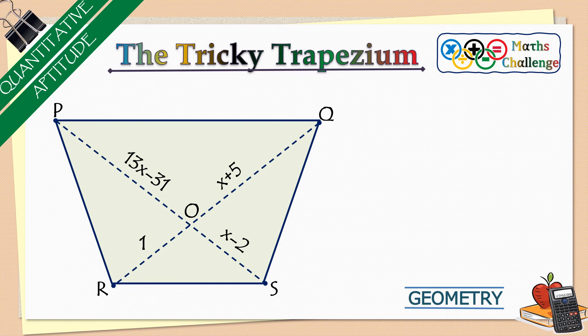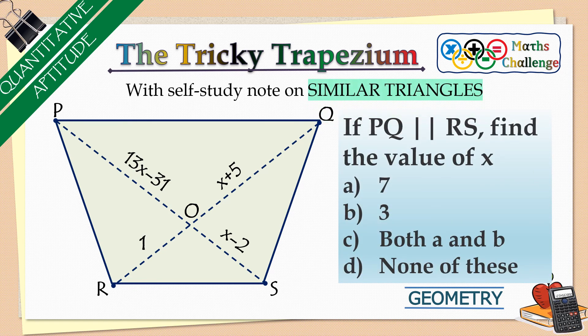The question goes like: if PQ is parallel to RS, find the value of x. And there are four options given to us.